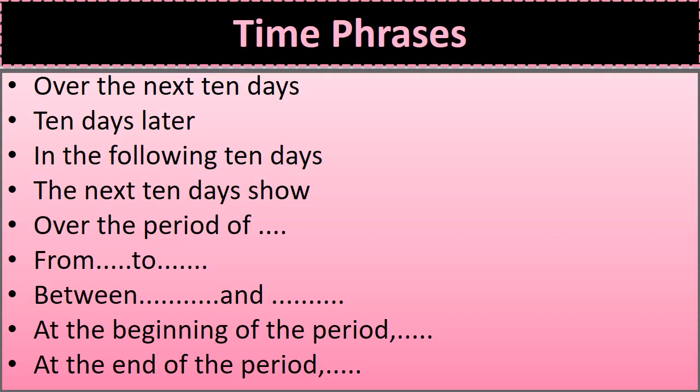Here are some time phrases which are also required for writing an analytical paragraph. For example: over the next 10 days, over the next 10 years, over the next century, over the period from [year] to [year], between [year] and [year], at the beginning of the period, at the end of the period. Make use of these phrases because examiners look for them when checking your answers.